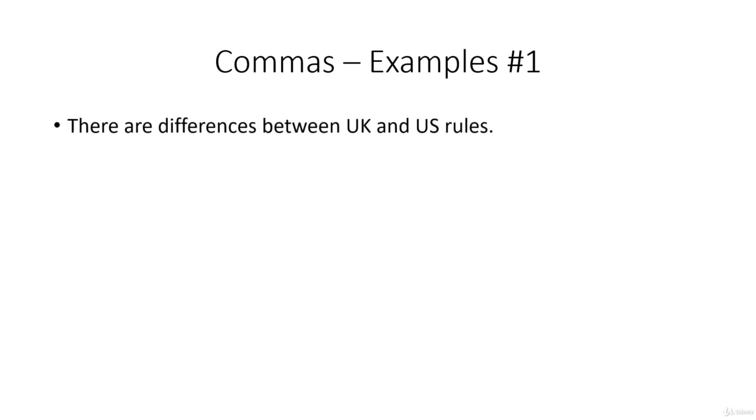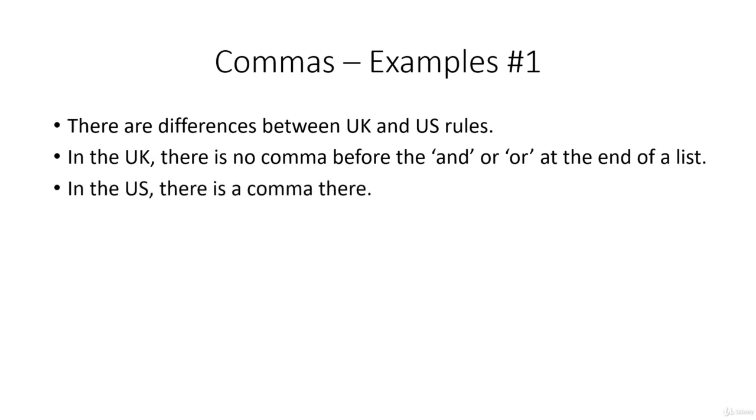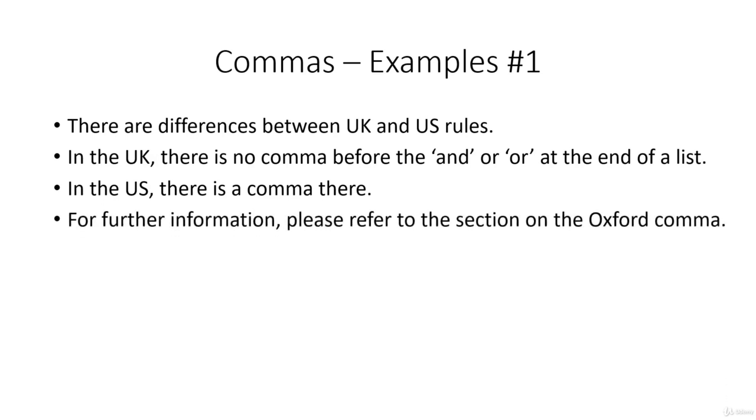There are differences between UK and US rules. In the UK, there is no comma before the AND or OR at the end of a list. In the US, there is a comma there. Now, there is a thing called the Oxford comma, which is a specialised version of this. So please see that section for more information.